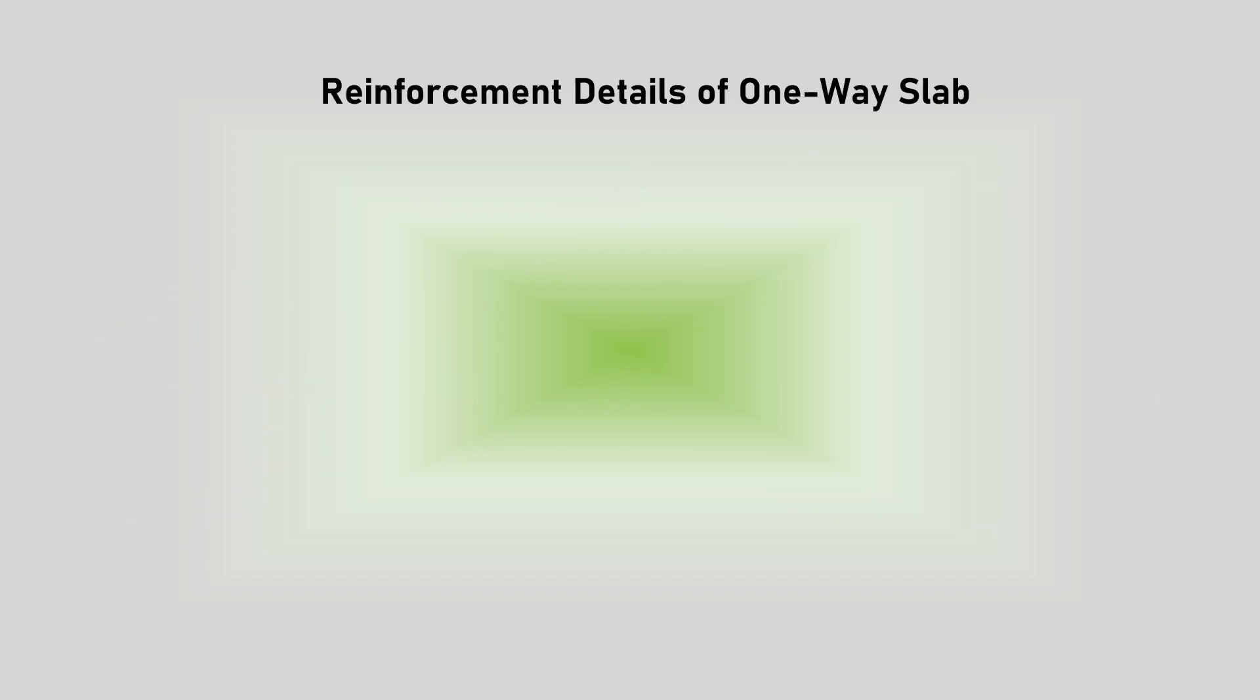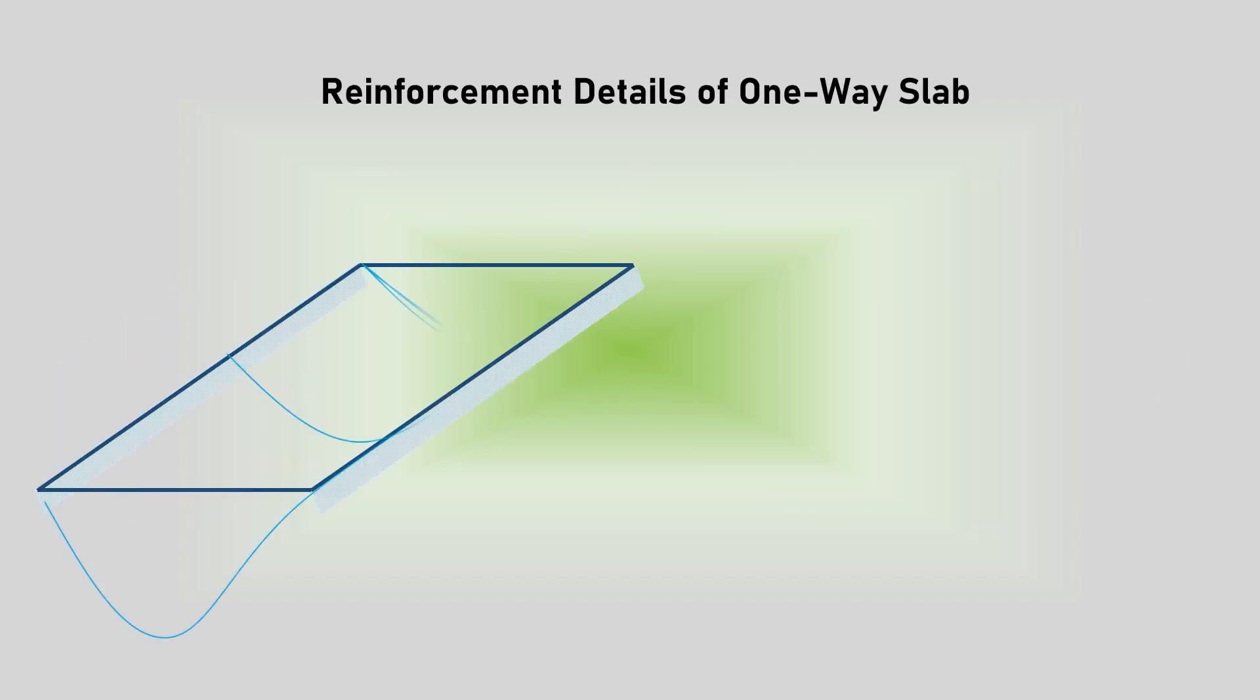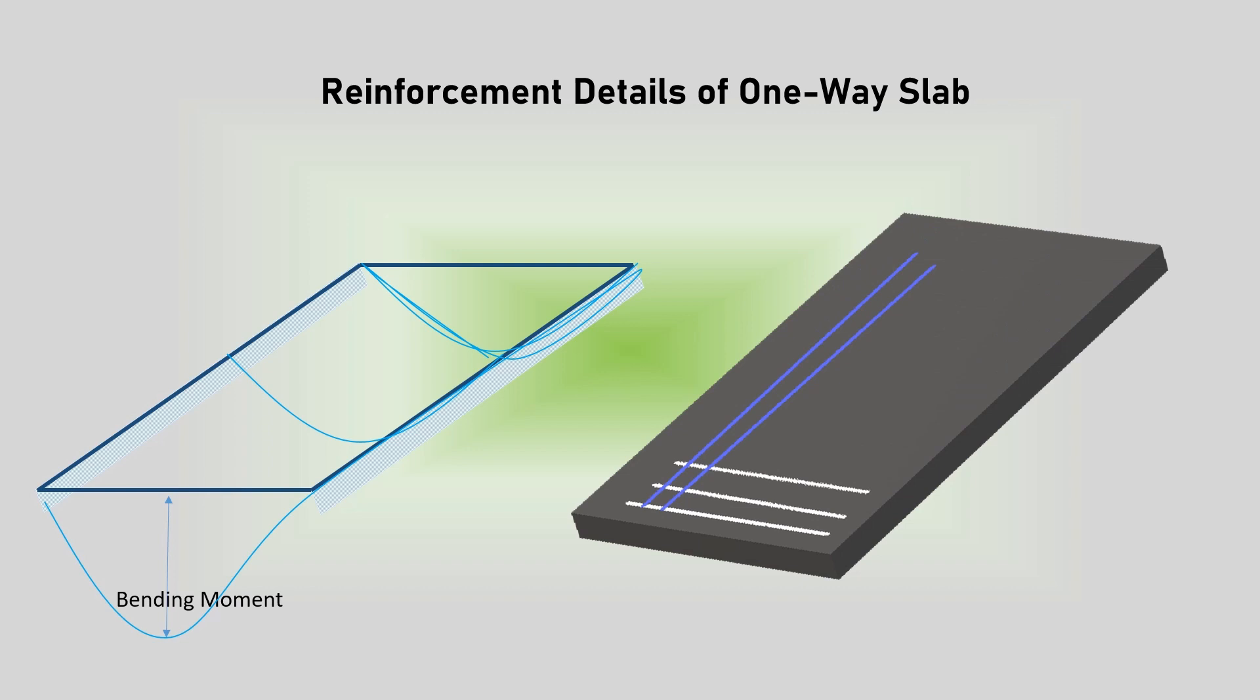Reinforcement for one-way slabs: Based on the structural behavior of one-way slabs, the main reinforcement to resist the flexural bending will be provided along the direction of the span. This forms the primary reinforcement for the slab.